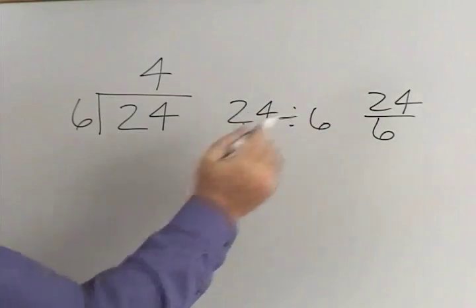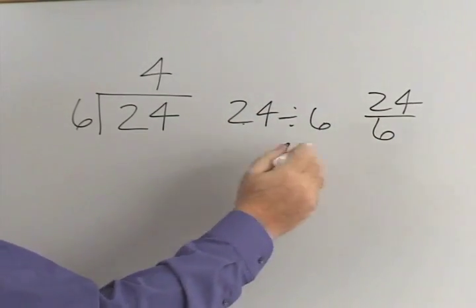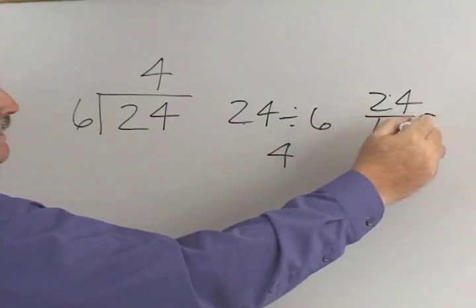24 divided by 6 is? 4. 24 divided by 6 is 4.